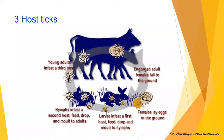In three-host ticks, the engorged adult female falls to the ground and lays eggs in cracks, crevices, soil, and grass. Hatching requires certain atmospheric temperature and humidity — hatching is faster in hot and humid weather. After hatching, larvae go to the first host, feed, engorge, drop down, and moult to nymphs. Nymphs go to a second host, feed, drop down, moult to adults, and adults infest the third host. An example is Haemaphysalis bispinosa.